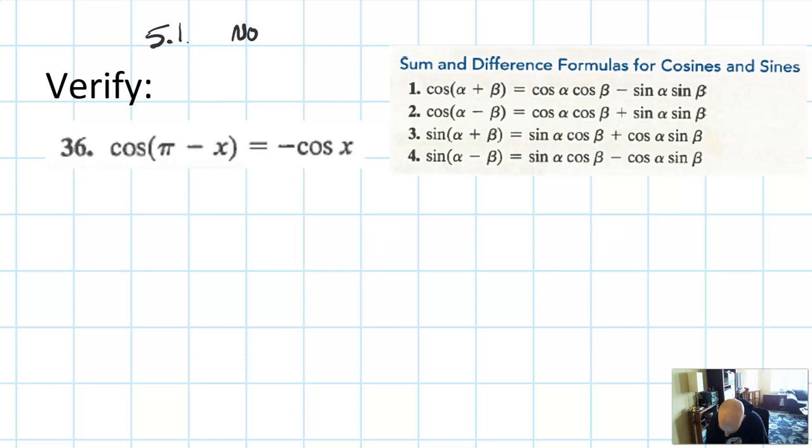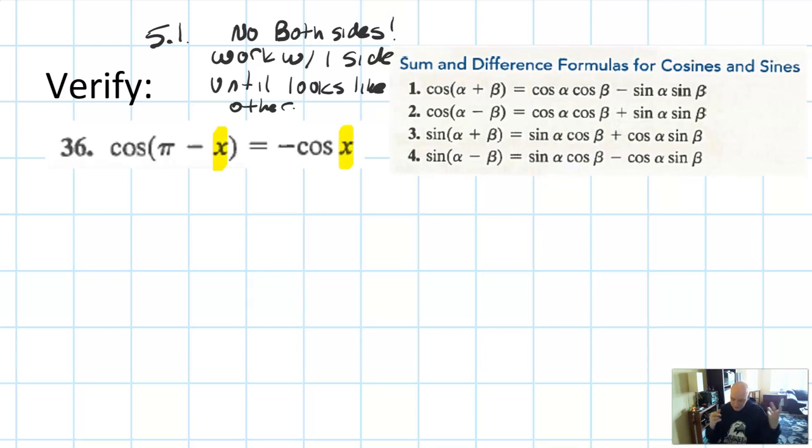You can't do both sides operations. You have to work with one side until it looks like the other. And often these will have an x, right? So if you were trying to use your previous knowledge of unit circle angles, you get stuck as soon as you land in that x. But what I notice is I have an x, but I also have a π. So π at least is a number. Remember, don't get too afraid of π. That's just a number.